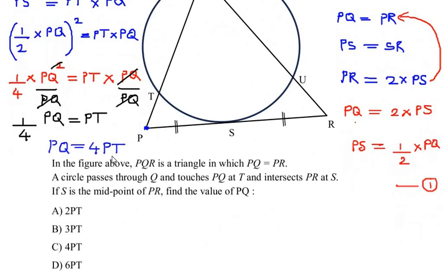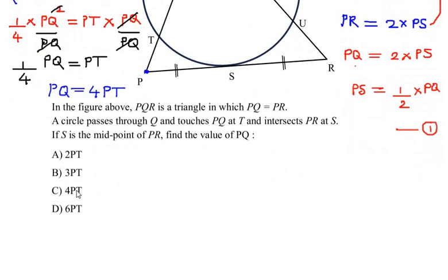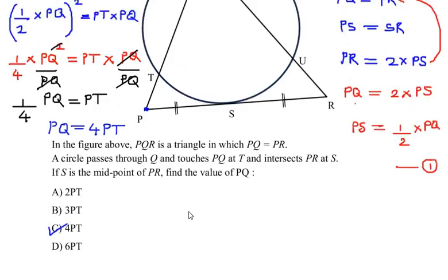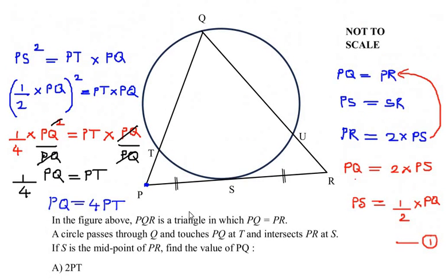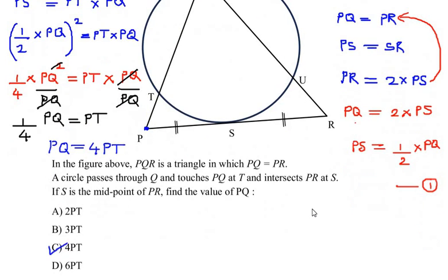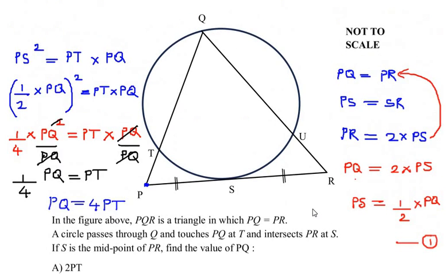So the value of PQ is four times the length of PT, which corresponds to option C. I hope you have understood all the steps. If you are liking my videos, please like, share, and subscribe to my channel. Thank you for watching.